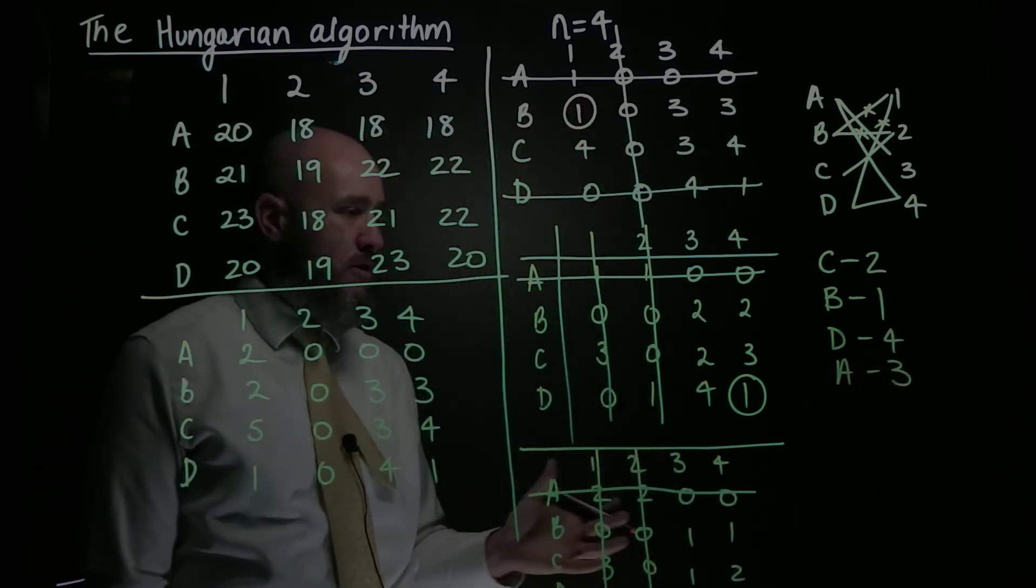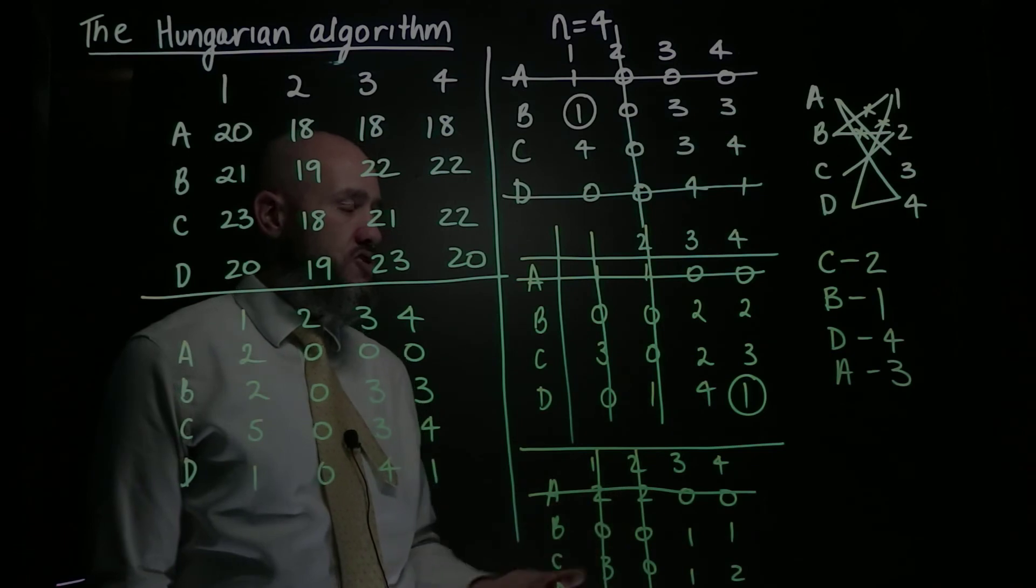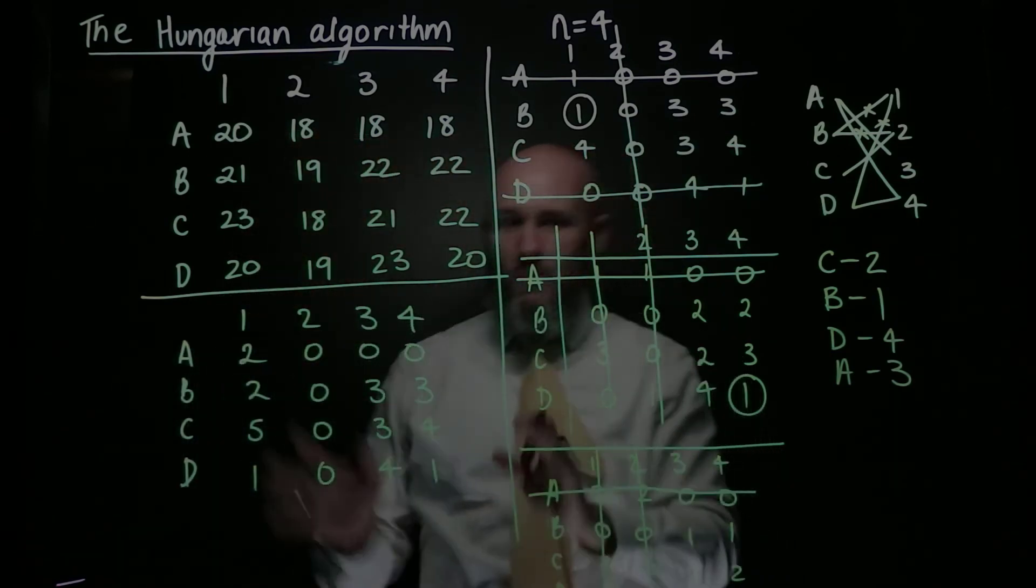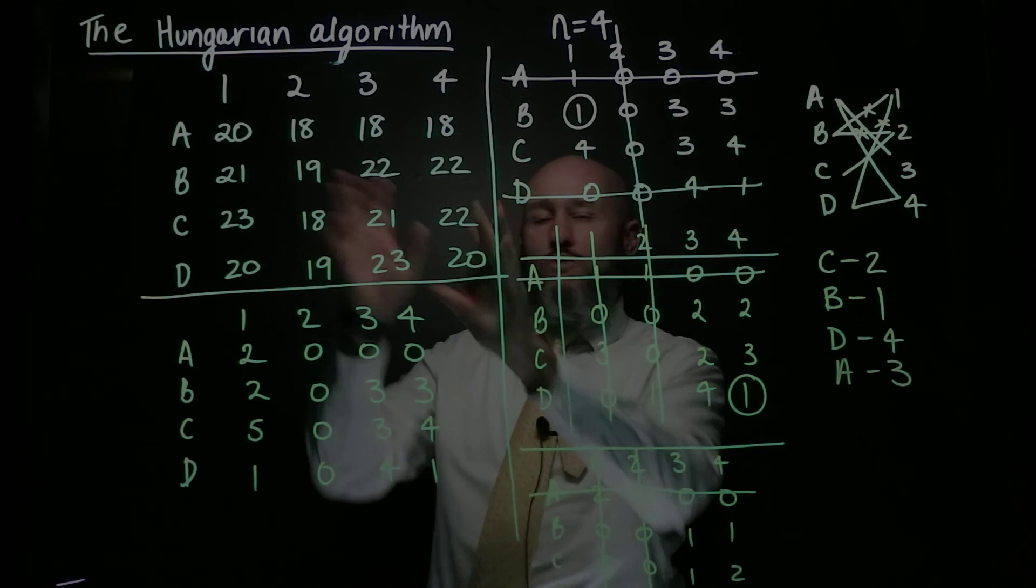And so there's my allocation, my matching, and now I can use that to determine a minimum for whatever this context is.